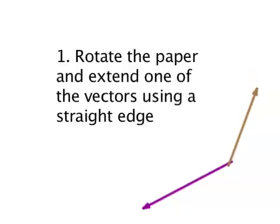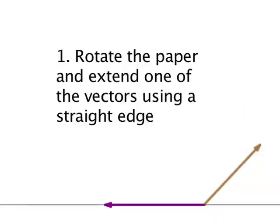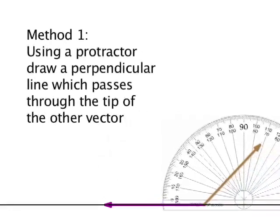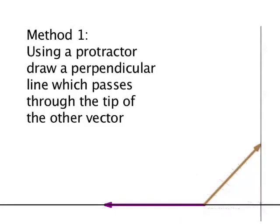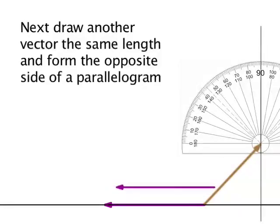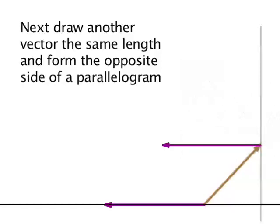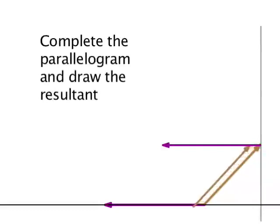Let's walk through this one more time. Rotate the paper and extend one of the vectors using a straight edge. Last time we used the vertical axis; this time we'll use the horizontal. There are two different methods from here. Method one: using a protractor, draw a perpendicular line which passes through the tip of the other vector. Next, draw another vector the same length and form the opposite side of the parallelogram. Complete the parallelogram and draw the resultant.